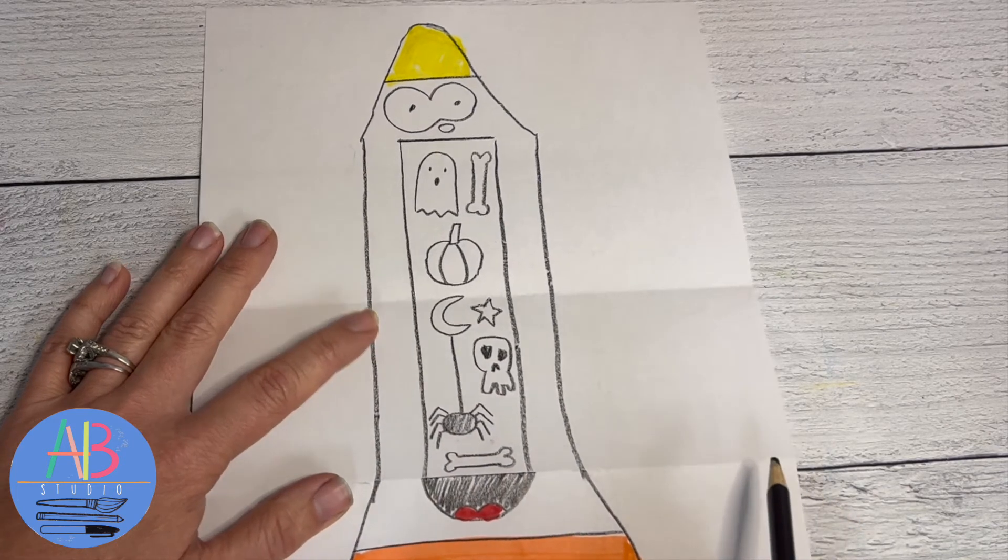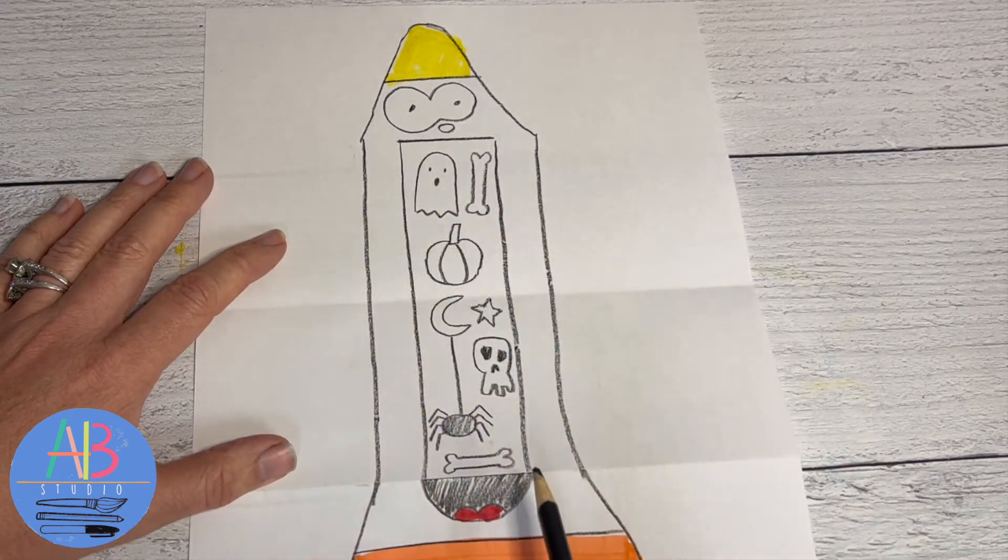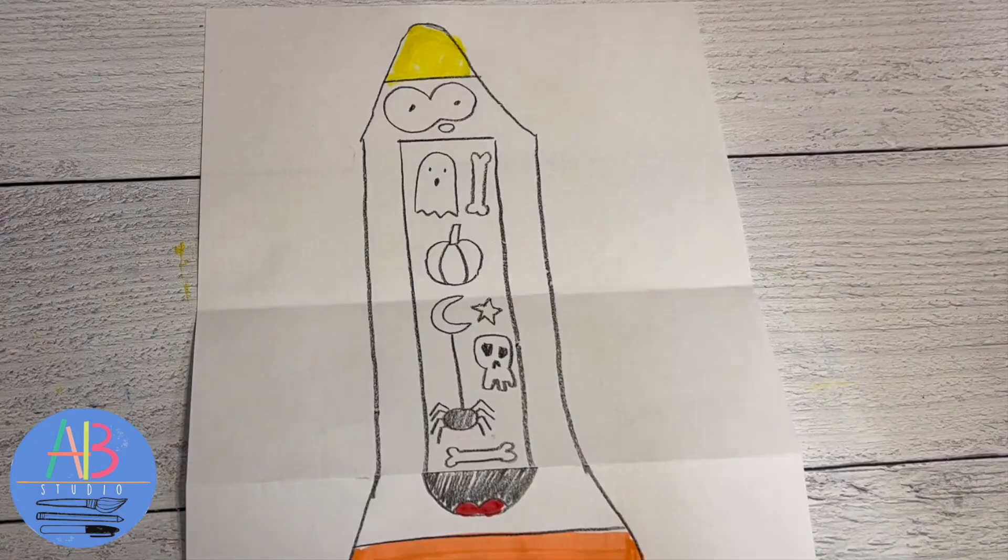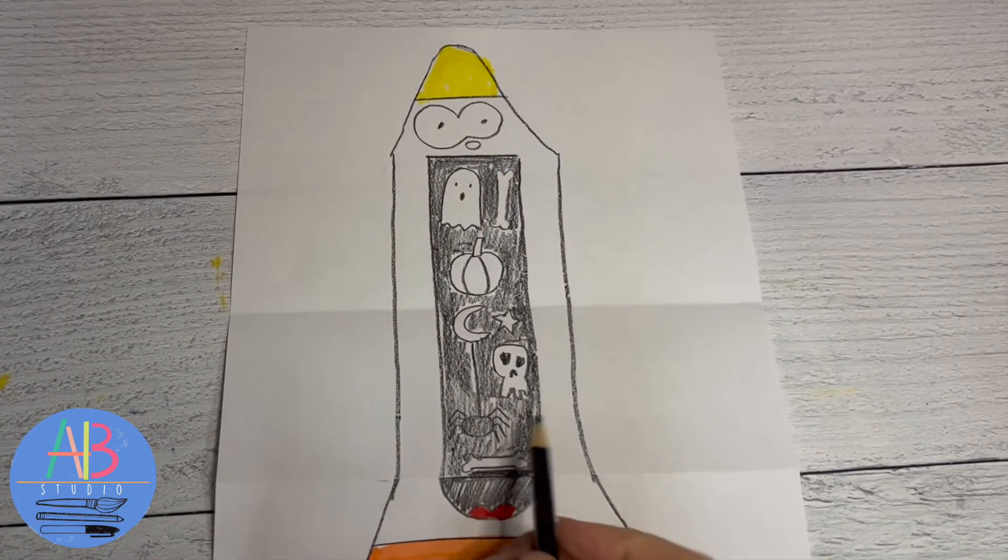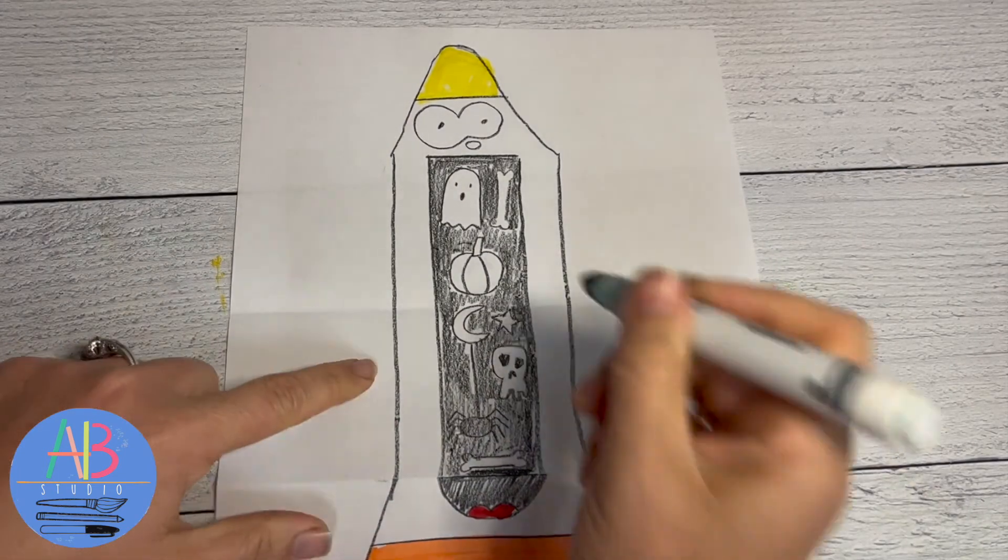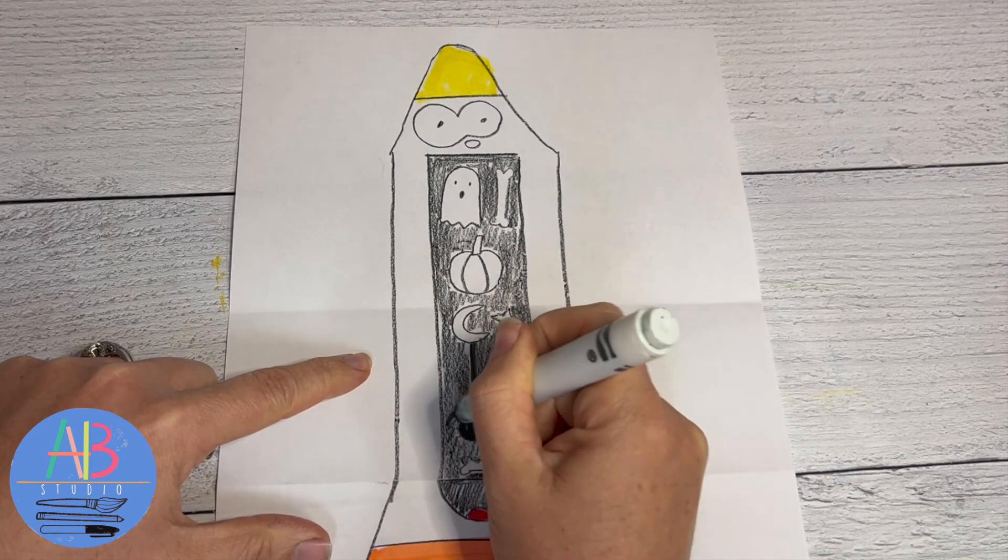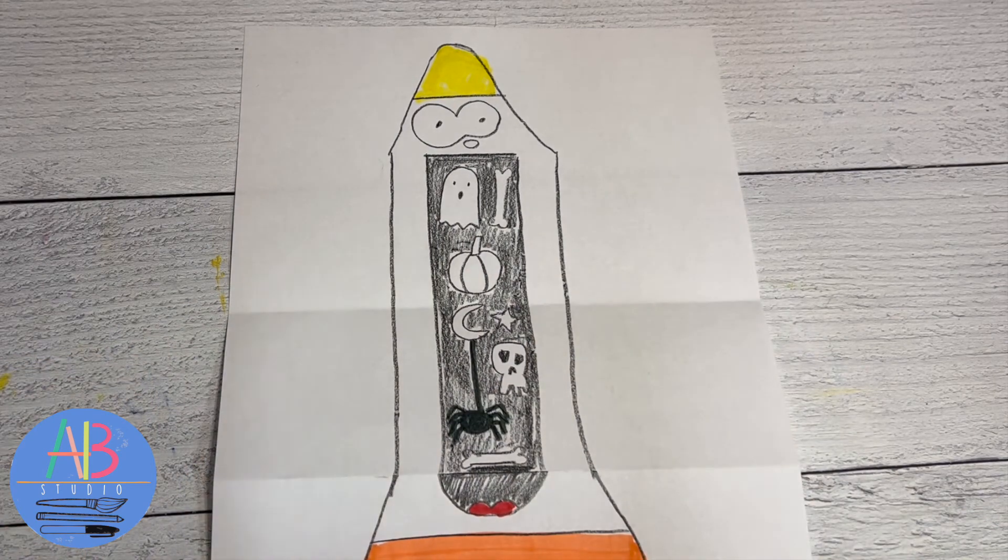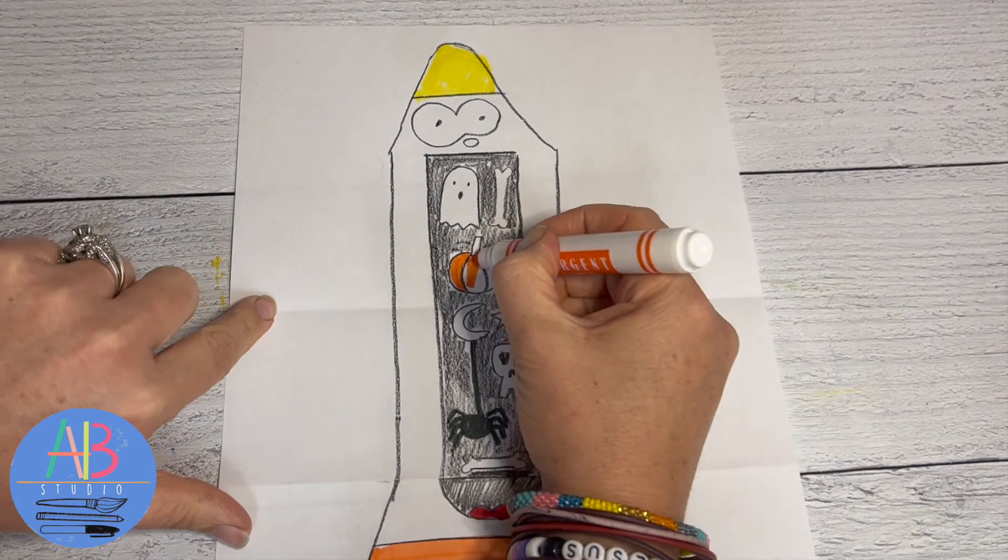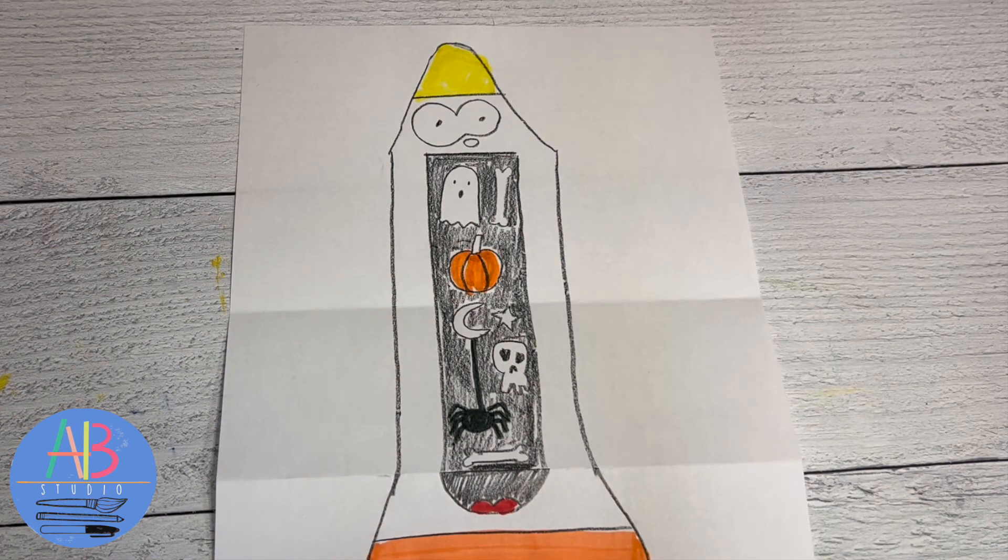Before I add color, I am gonna take my black colored pencil and color black around these shapes. I didn't realize I was gonna cover up my spider, so I am gonna take my marker and go over that. Pumpkin - my ghost is white, my bone is white.